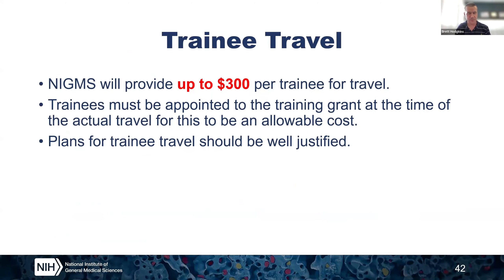Another item of cost on the training grant applications for MSTPs is travel. Currently, NIGMS awards up to $300 per trainee per year for travel. The important things to note are that the actual plans for trainee travel need to be well justified, and the travel must be relevant to the trainee's experience on the MSTP program. It is also very important that the trainees must be appointed to the training grant at the time of the actual travel for this to be an allowable cost.